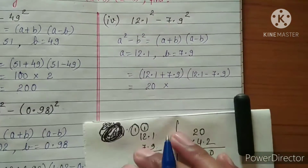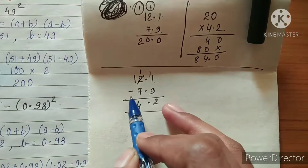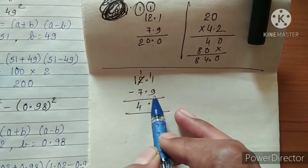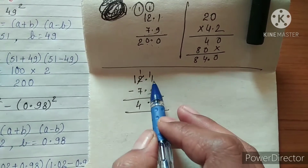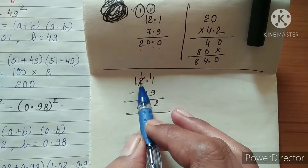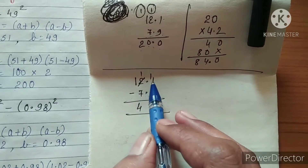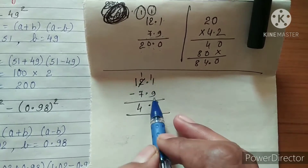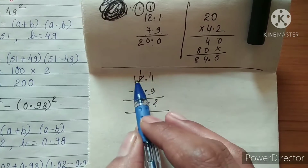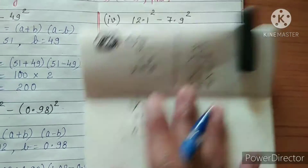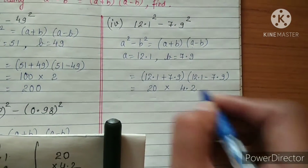20 multiplies by 12.1 minus 7.9. Since 1 cannot subtract 9, it borrows from 2; 2 gives 1 as borrow, making 11; 11 minus 9 is 2. Decimal in the same line. 11 minus 7 is 4, giving us 4.2.